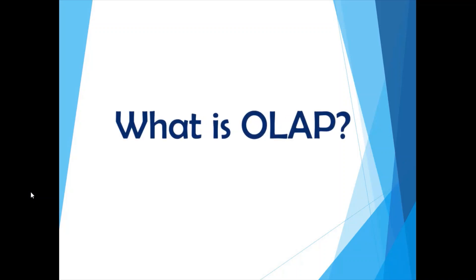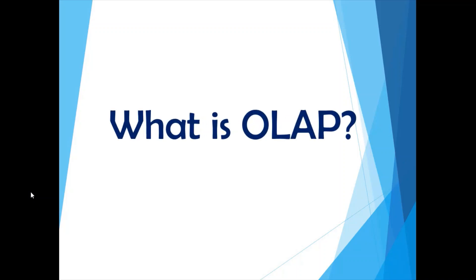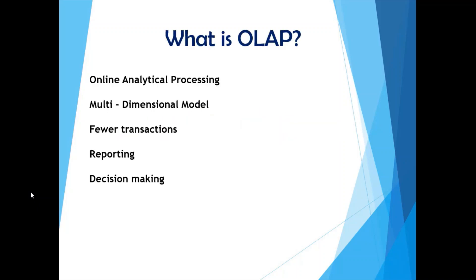Moving on: what is OLAP? OLAP is very opposite to an OLTP system. It stands for online analytical processing and is a multidimensional model. It is basically what you have on top of your data warehouse — the analytics you do with the stored data. These are your reports, multidimensional reports, or cubes created on top of your data warehouse. There are fewer transactions involved because only business users are dealing with it, so fewer queries are executed.